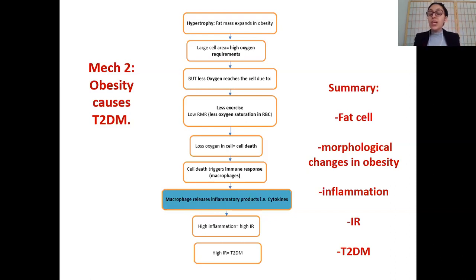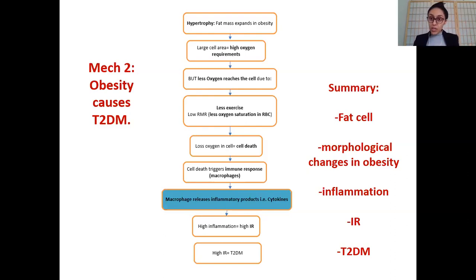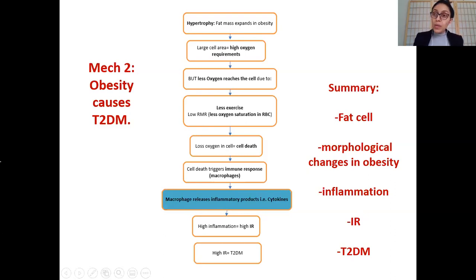So with mechanism 2, you have a lot of inflammation, which means high insulin resistance and less insulin sensitivity, resulting in type 2 diabetes. To summarize: mechanism 2 is about the morphology of fat cells — hypertrophy leads to less oxygen and nutrients reaching the cells, causing necrosis, which triggers the immune system, producing macrophages and T cells, resulting in inflammation, insulin resistance, and type 2 diabetes.